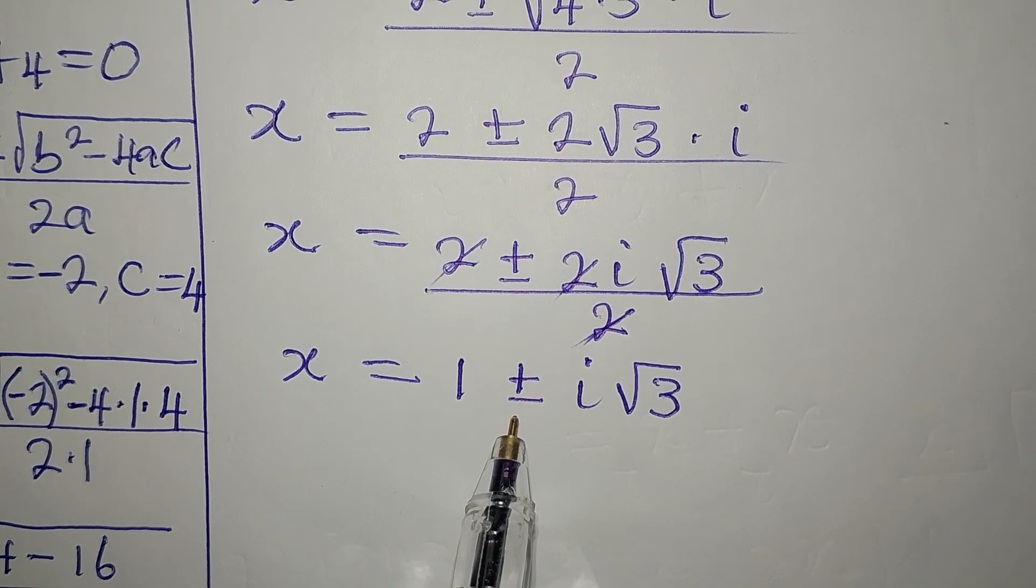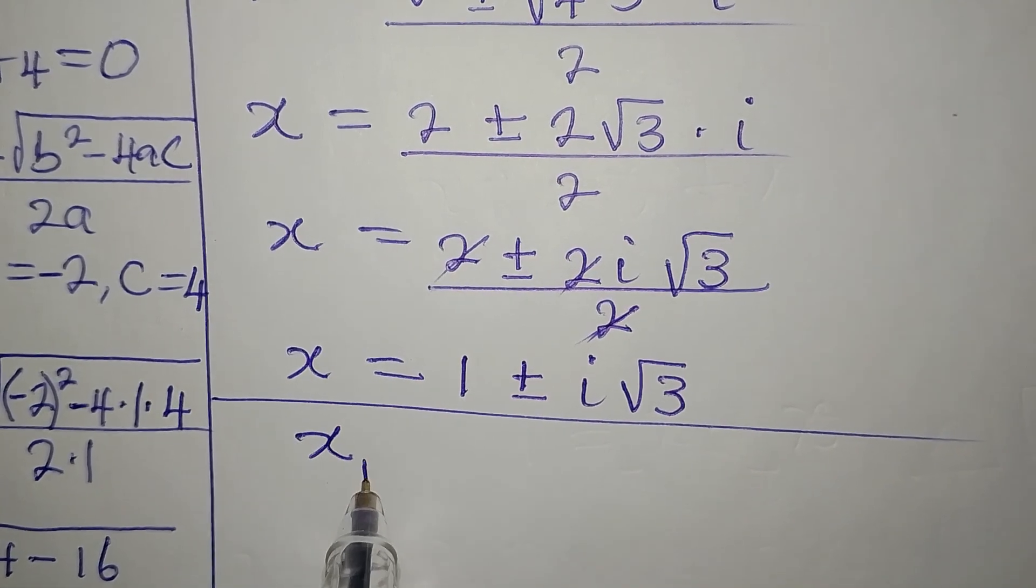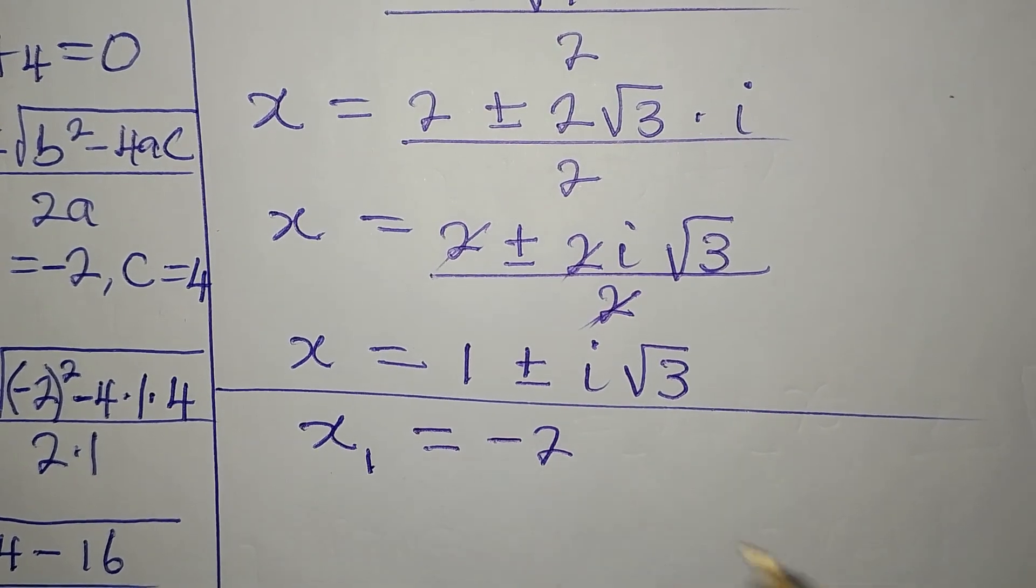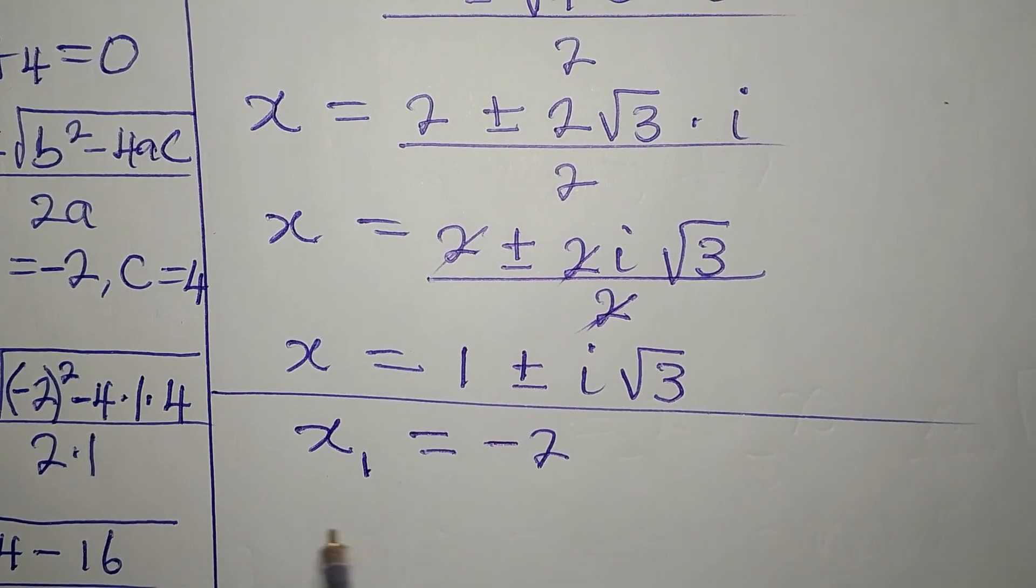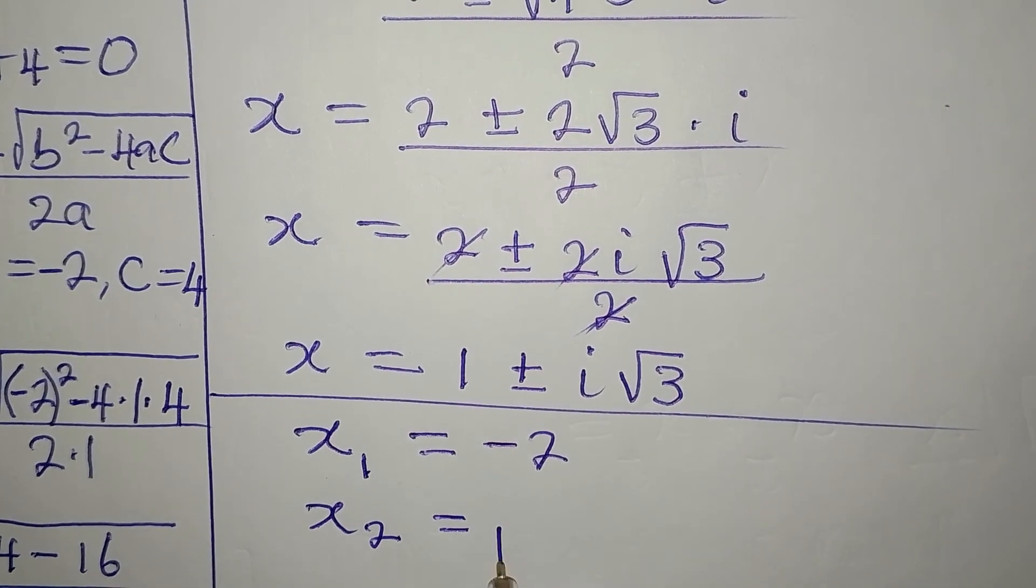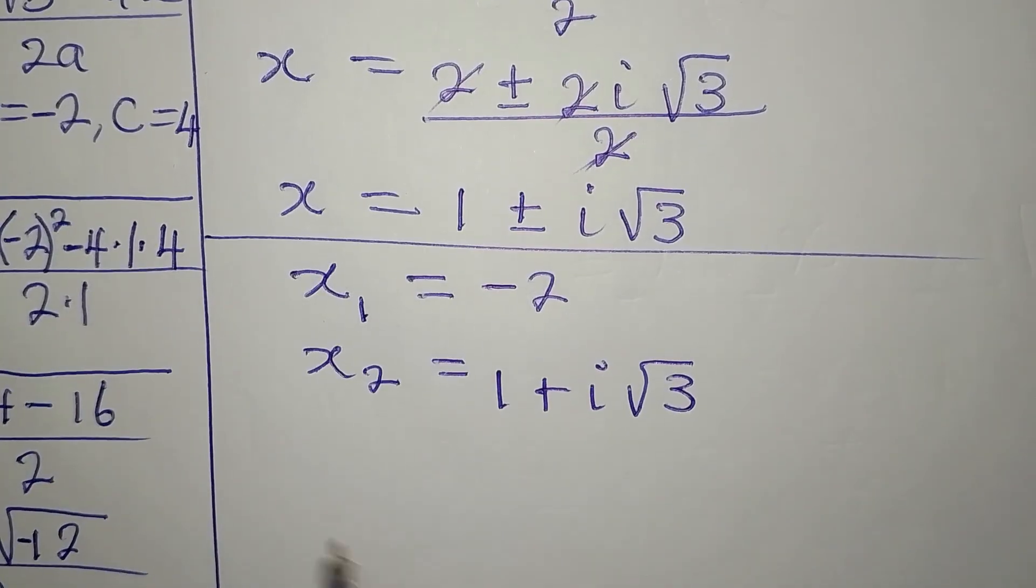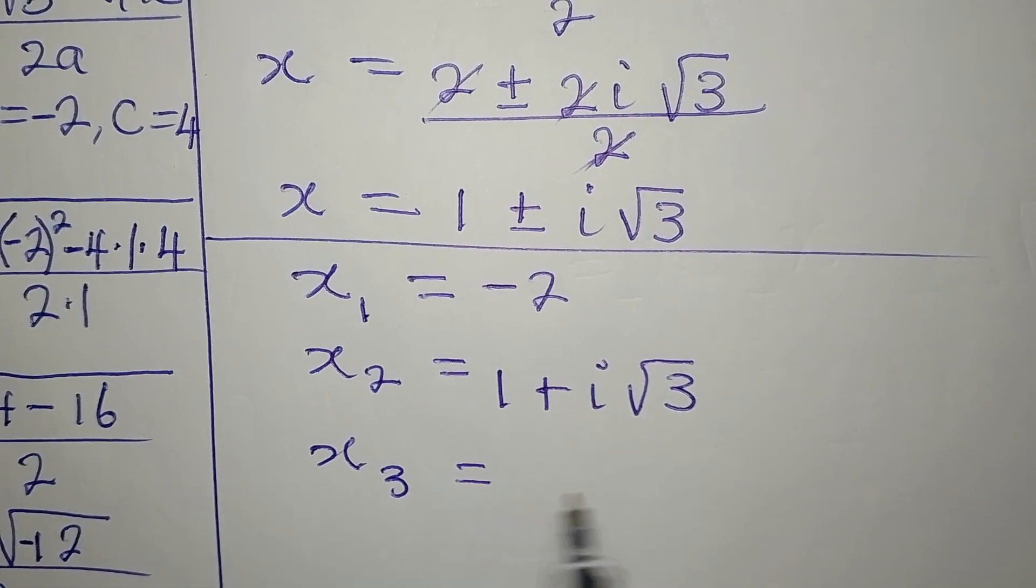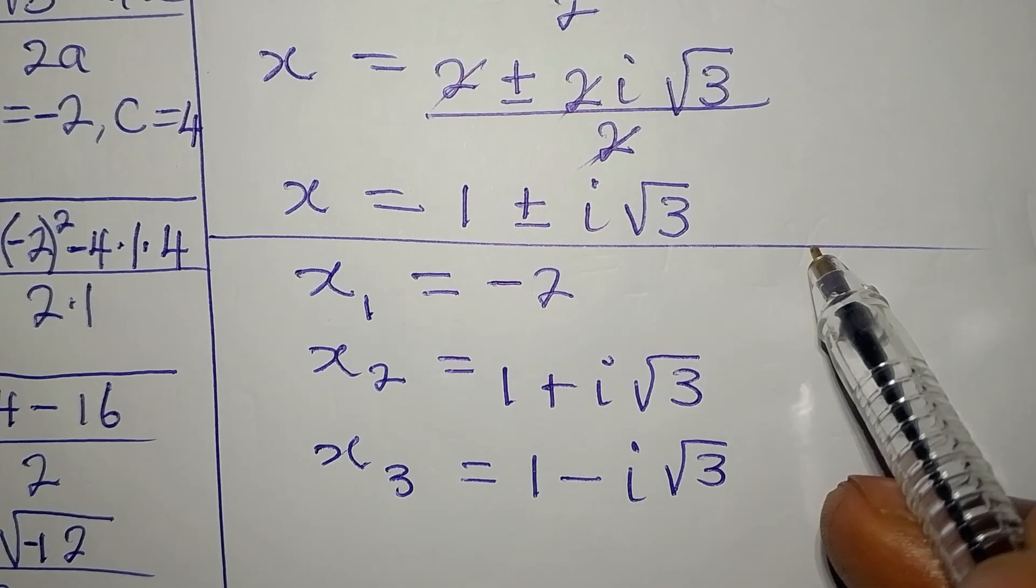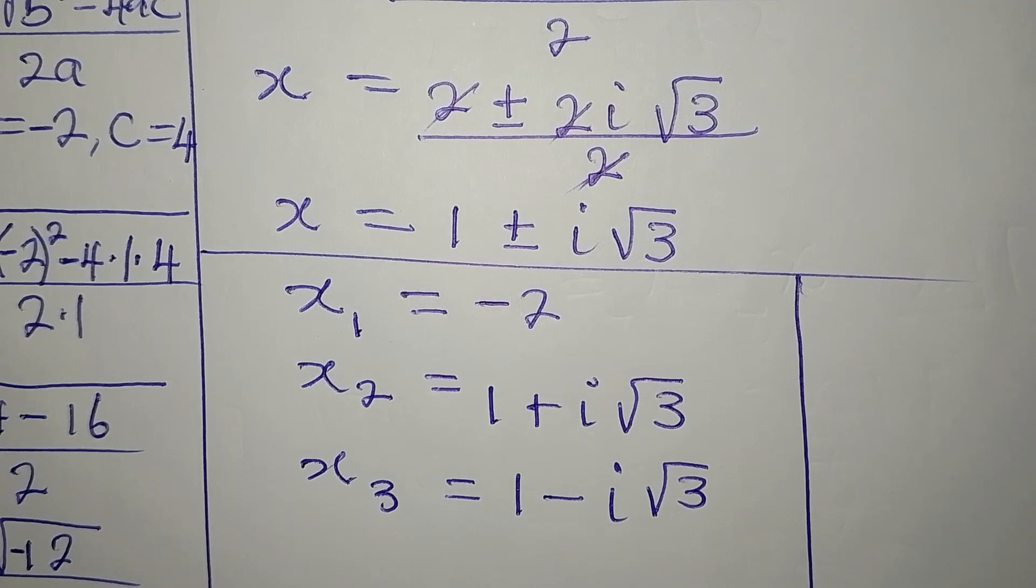So from here, we have all the solutions. Let's bring the 3 solutions together. x1, which is equal to negative 2, that is the first solution, then we have our x2, which is equal to 1 plus i root 3. Then the third solution, x3, is 1 minus i root 3. So these 3 are the solutions to the equation. Thank you for watching.